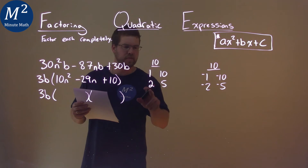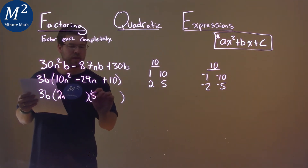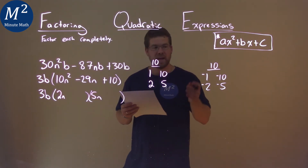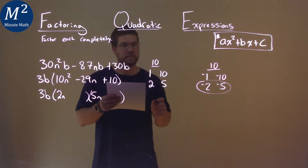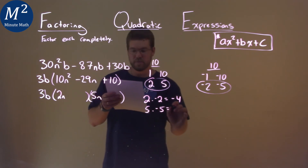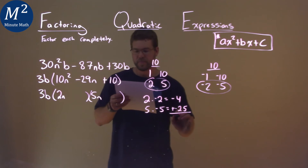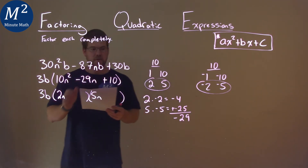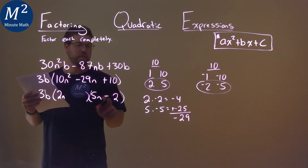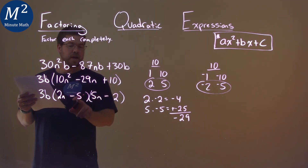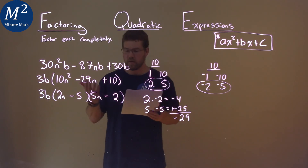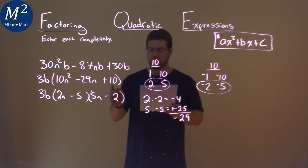So we can test some values — let's use 2 and 5. So we have 2n and 5n as our base. We want to think: does 2 times one of these numbers times 5 times the other number get to 29? We see that with negative 2 and negative 5. 2 times negative 2 is negative 4, and 5 times negative 5 is negative 25. If we add the two numbers together, we get negative 29, and that's what we're looking for. So this 2n is multiplied by negative 2, and the negative 5 will multiply by this 5n. Combine them together, you get that negative 29n. Our final answer is 3b times (2n minus 5) times (5n minus 2).